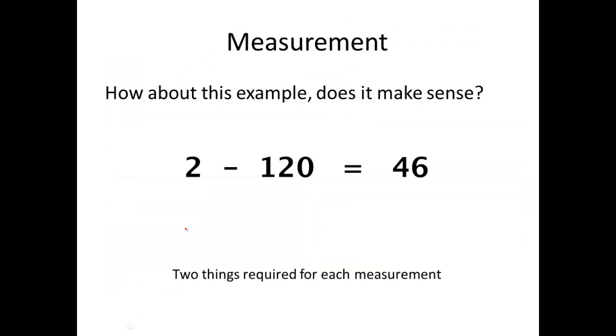Now, talking about measurement, let's look at this example. Does it make sense? 2 minus 120 equals 46. So, there's something in it that doesn't make sense. In a measurement, two things are required. We need a number and we need to have a unit. If we add some units to this, I think it'll start to make more sense. Let's say that it's two days minus 120 minutes. Okay, so two days would really be, let's say it's 48 hours. Minus 120 minutes would be two hours, which would equal, in this case, 46 must be the number of hours. Okay, now it makes more sense to us. 48 minus 2 equals 46.